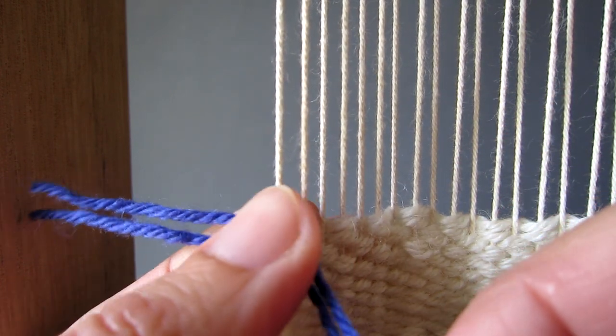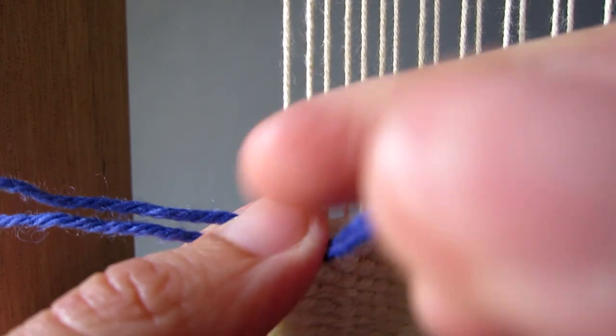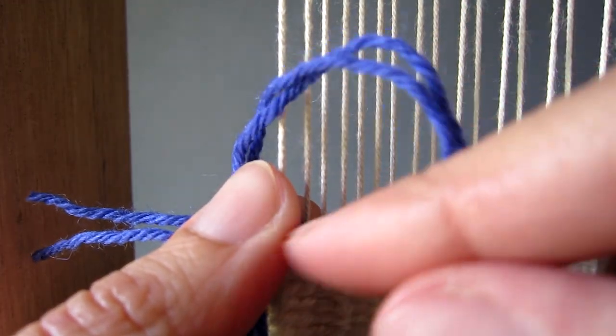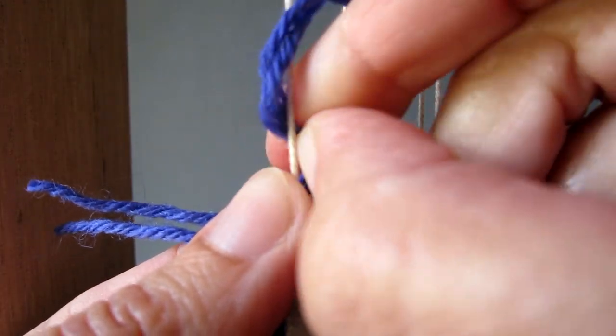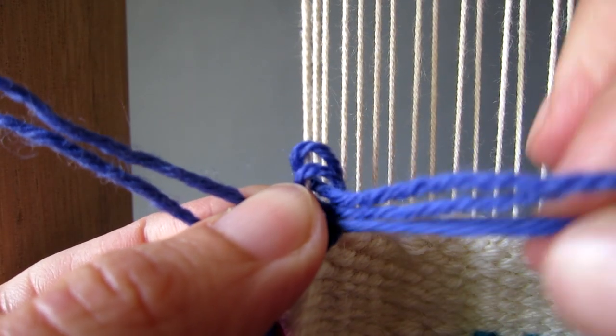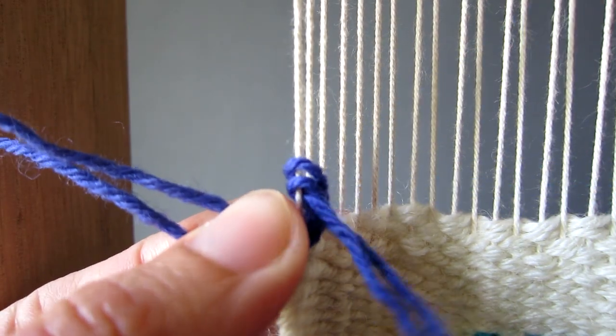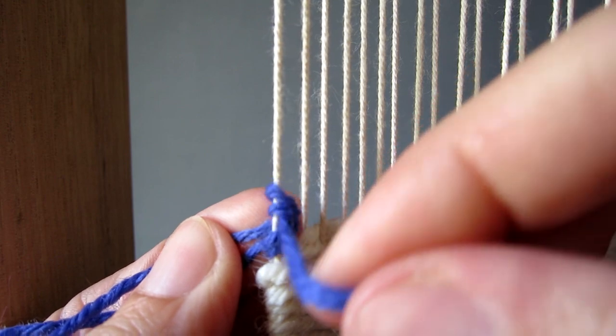Next make a second D-shaped loop and pull through the yarn again, making sure to tighten the knot this time by pulling down firmly.